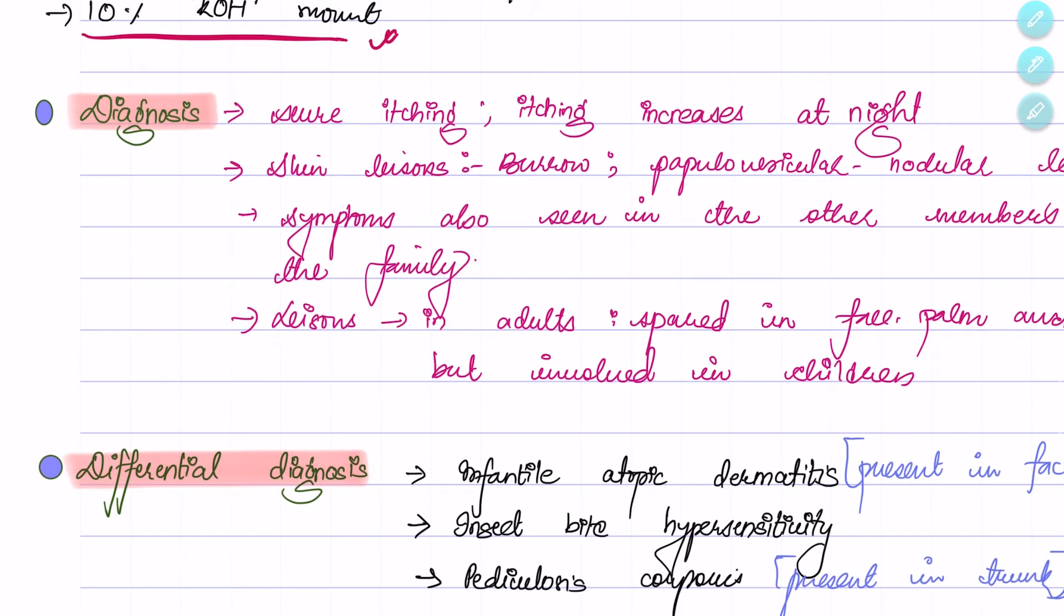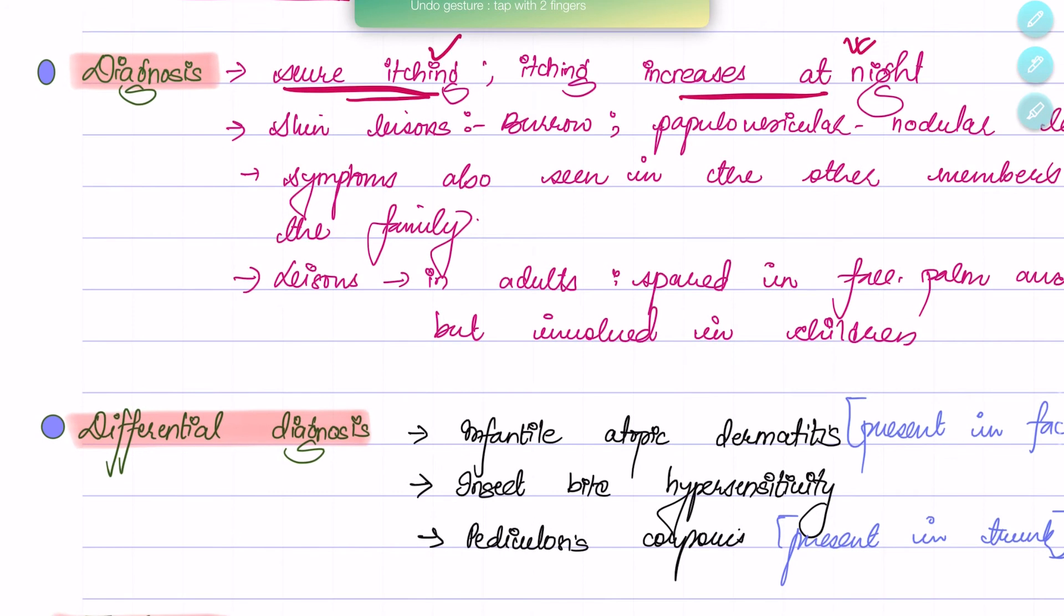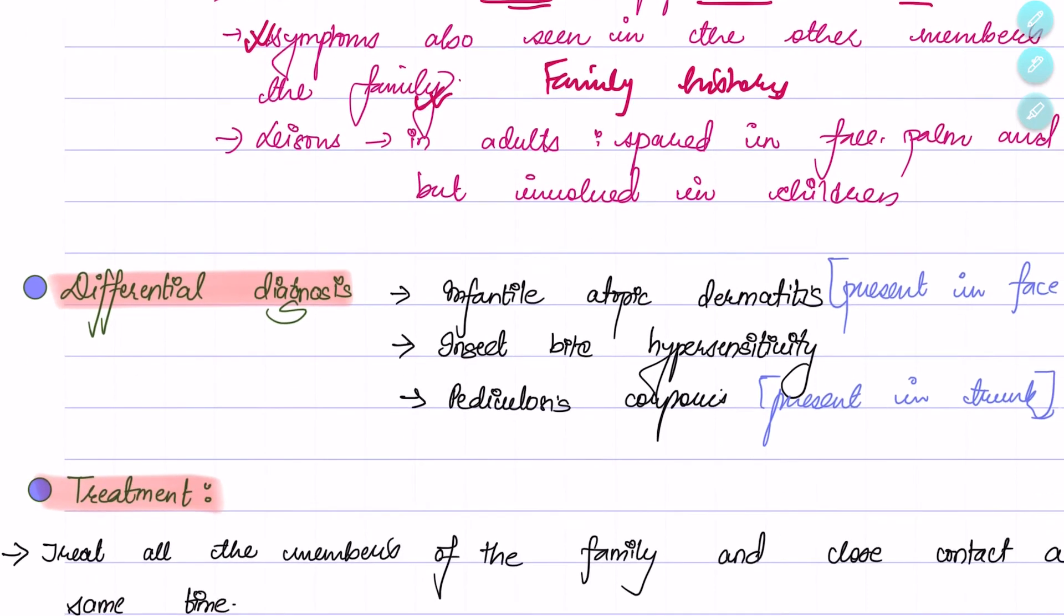The diagnosis of scabies is made when the patient gives history of severe itching which increases at night. The skin lesions are burrows, papules, vesicles, and nodular lesions. Similar symptoms will be given by other members of the family, so family history is very important. If the patient is adult, lesions will not be found in face, palms, and soles, but if it is a child, they will be involved.